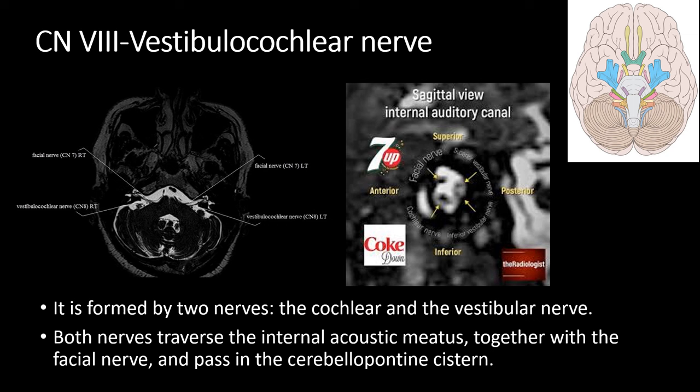The eighth nerve, or the vestibulocochlear nerve, is formed by two nerves: the cochlear and the vestibular nerve. Both nerves traverse the internal acoustic meatus together with the facial nerve and pass through the cerebellopontine angle cistern. Within the internal acoustic meatus, the facial nerve is anterior superior, the cochlear nerve is anterior inferior, the superior vestibular nerve is posterior superior, and the inferior vestibular nerve is posterior inferior. An easy way to remember this is '7-up' — meaning the 7th cranial nerve is upward — and 'Coke down' — meaning the cochlear nerve is inferior.